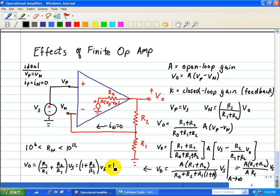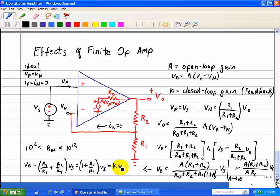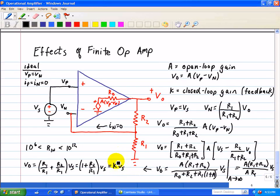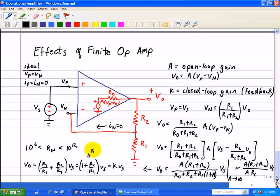Which is just equal to K times VS. Our closed loop gain is given as K. Note our open loop gain is A and our closed loop gain is K which has feedback. So this value of K is what we calculated earlier for a non-inverting op amp that's ideal.